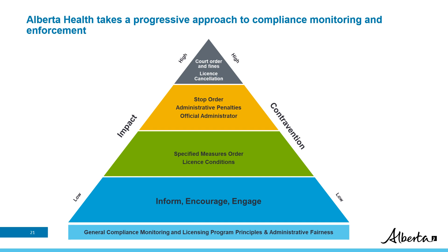The bulk of activity includes inspections and audits, which are primarily unannounced. Moving up the compliance pyramid, enforcement measures are applied when a contravention is identified. Alberta Health uses a progressive approach to enforcement, starting with a risk-based assessment to determine the appropriate enforcement measures and a review of the operator or provider's compliance history. If there have been serious, high-risk, or repeat instances of contravention that negatively affect the health, safety, or well-being of residents or clients, Alberta Health will action the most appropriate enforcement tool to bring the operator or provider into compliance.